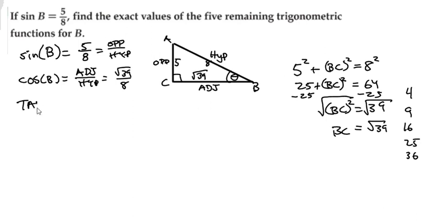And then when we do tangent, tangent of b is going to be equal to the opposite over the adjacent side. Opposite over adjacent. So you're going to have 5 over my adjacent side, which is square root of 39. And we can't leave this like this. We have to rationalize the denominator, it can't have a square root in there.